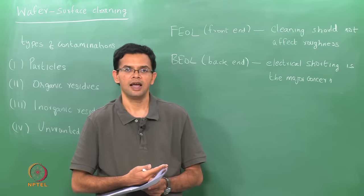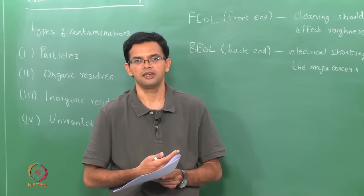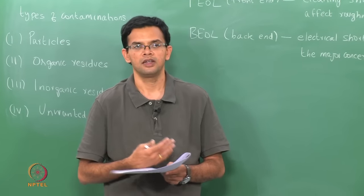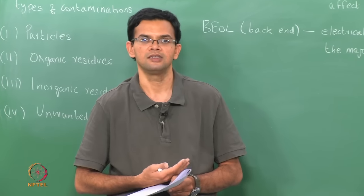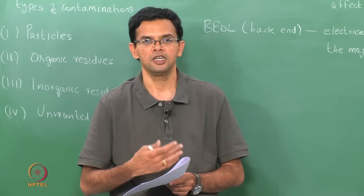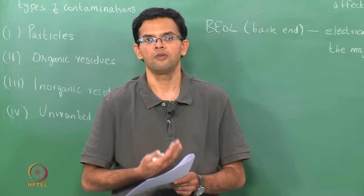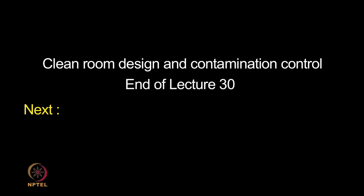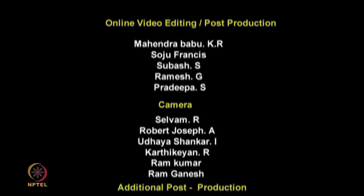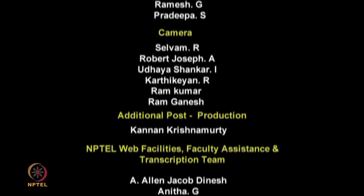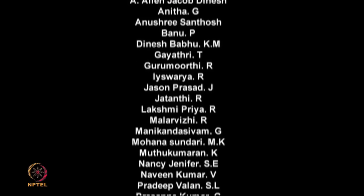Today we have looked at the various ways we can maintain cleanliness in the fab — by choosing the appropriate fab design, and also by ensuring clean process chemicals, clean gases, clean DI water, and by periodically cleaning the wafers during fabrication. In the next class we are going to look at the various components of an integrated circuit — we saw that the IC is formed from various devices like diodes and transistors, and we will see how all of these are fabricated and how they come together to form the IC circuit.